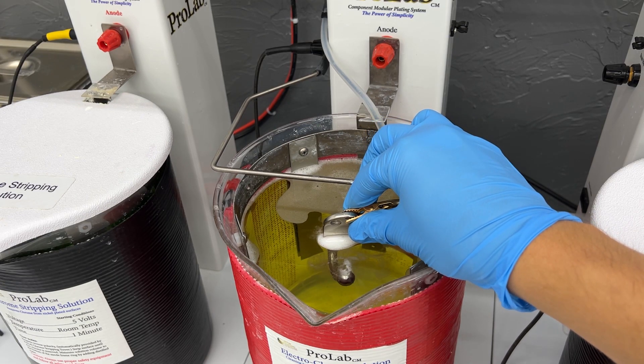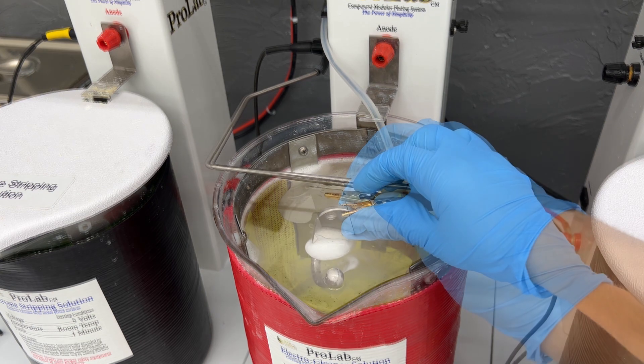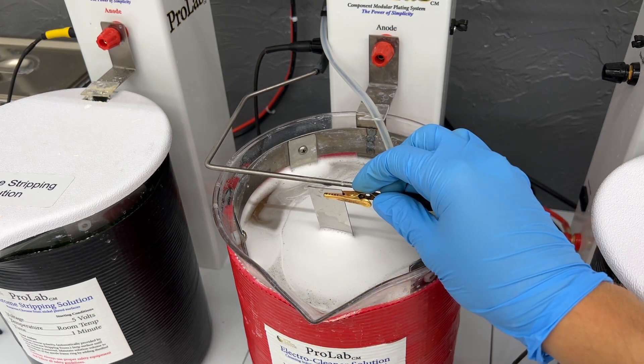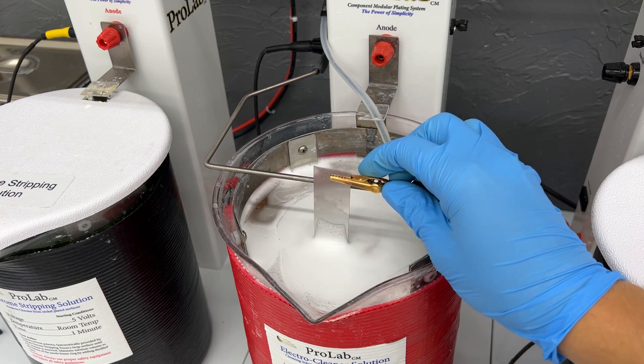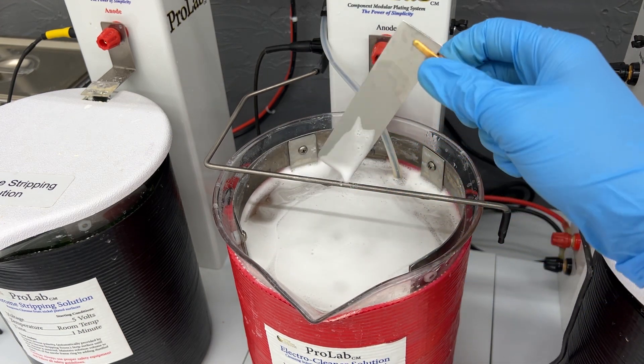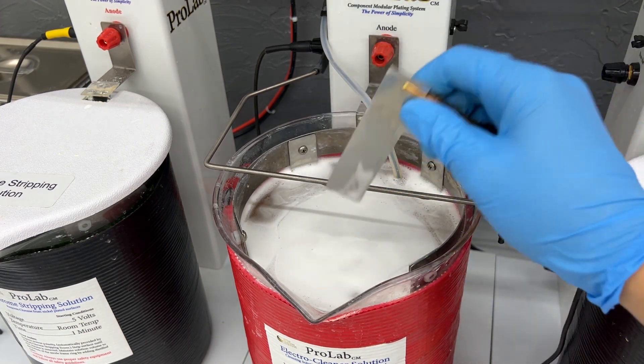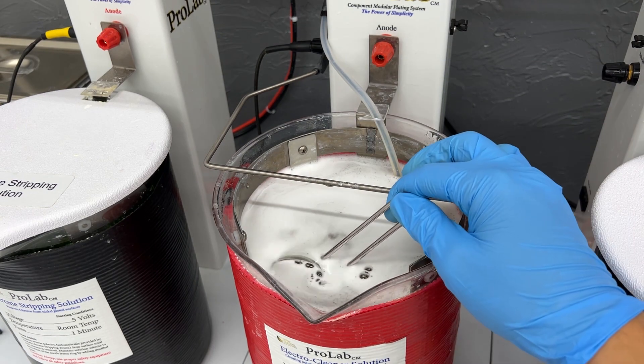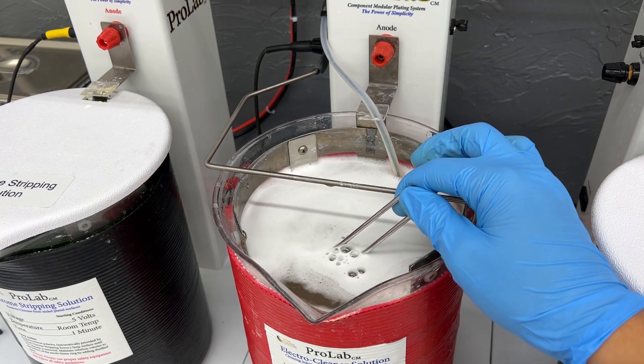How long should I electro clean for? Well, it depends on the size and the shape of what you are plating, but it should take no longer than two minutes for an item to be completely wet out. If your item is taking a long time to wet out, maybe it's time to either change out the solution or to change out your components.